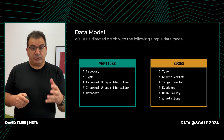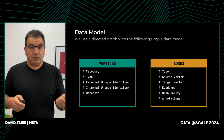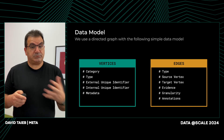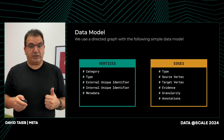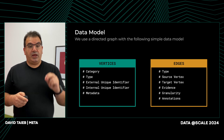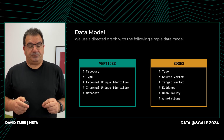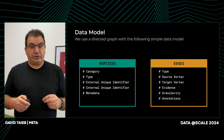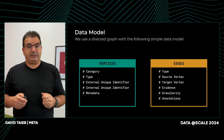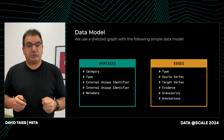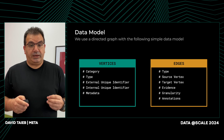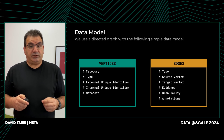For edges, similarly we use a type — either a flow or a containment. A containment is a parent-child relationship; for example, a table has multiple columns. We store a source vertex node, a target vertex node, and an evidence node representing the process that generated that edge. We store the granularity — whether it's table, column, column-partition, or partition level. And finally, similar to vertex metadata, we store the annotation, which is a free-form key-value map of attributes that provide contextual information about the edge.